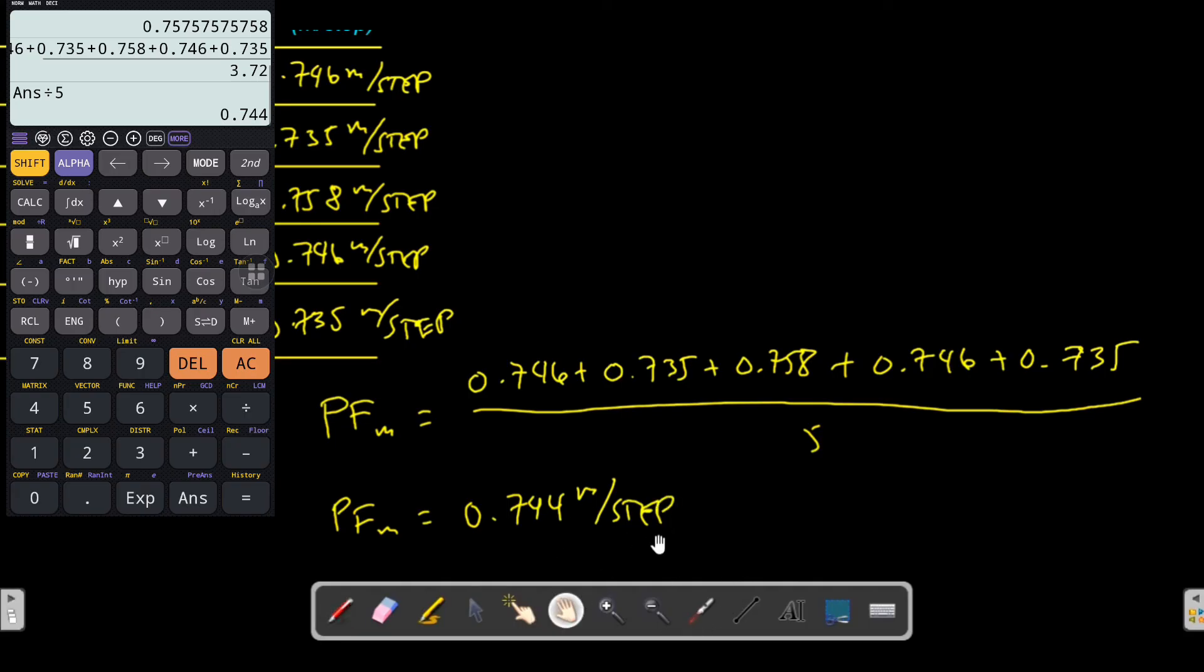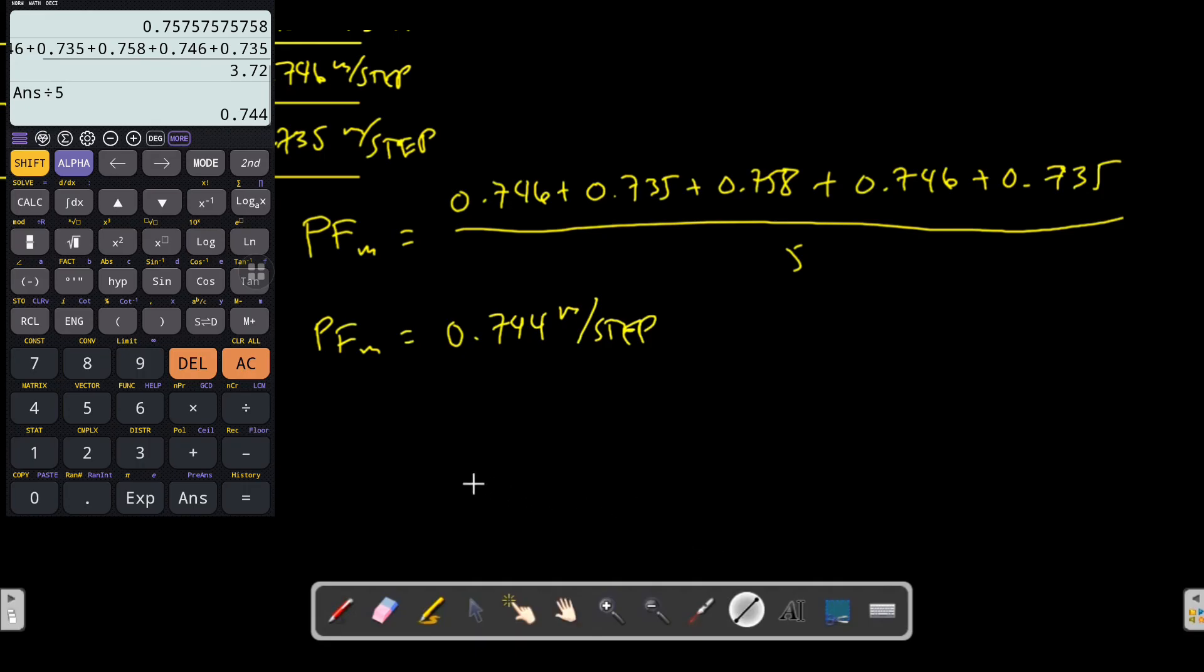Every time you're going to measure a line, you just have to walk from this point to that point and you'll have an estimate of how long is this distance based on your pace factor.